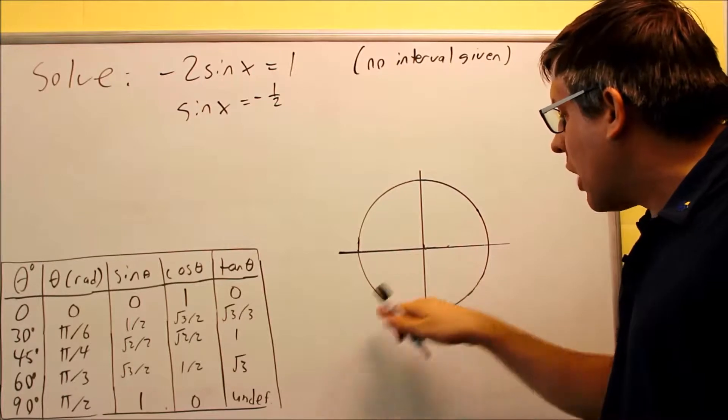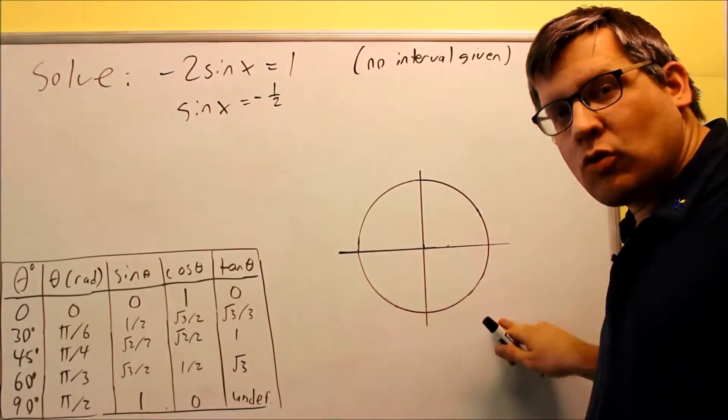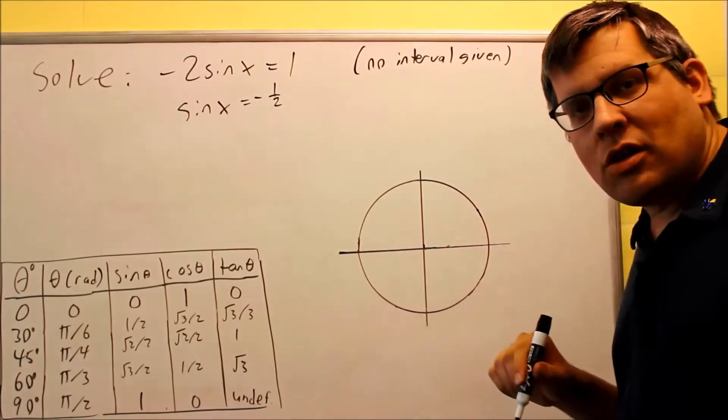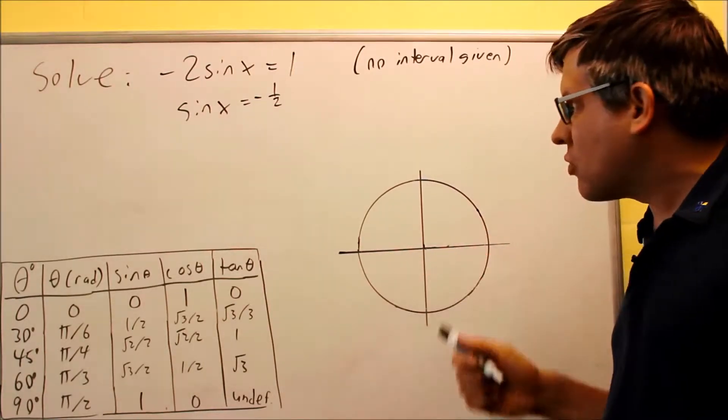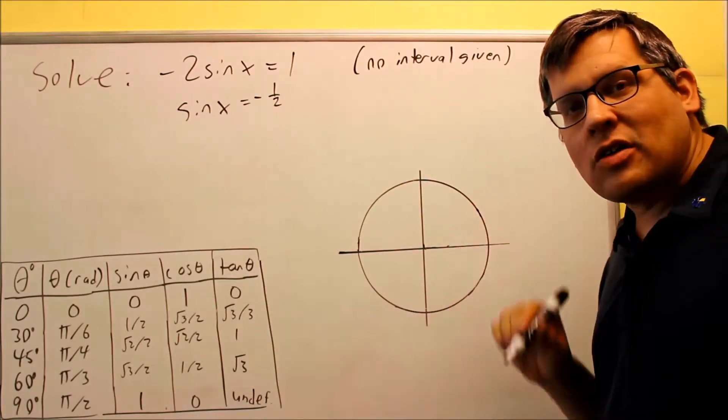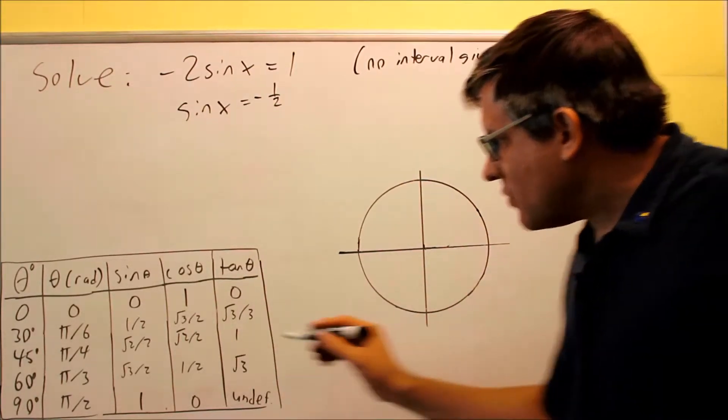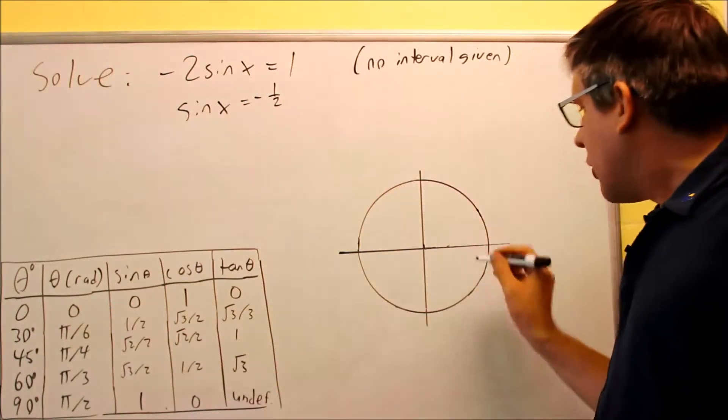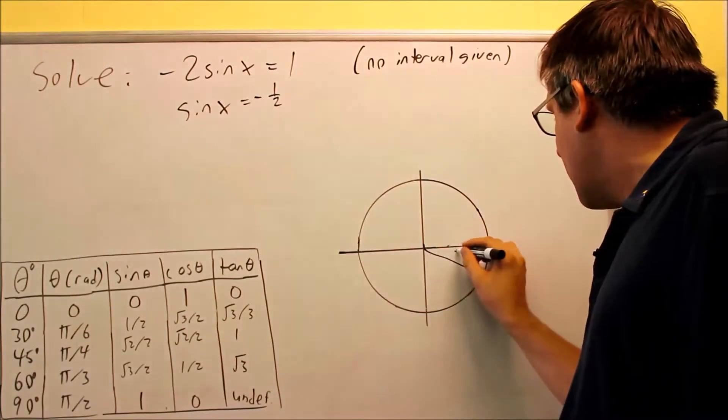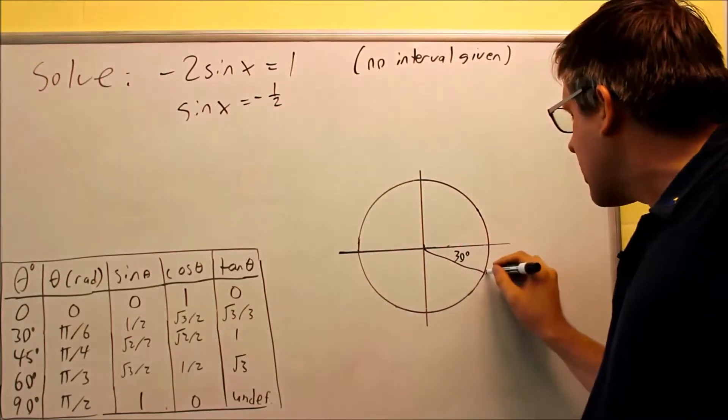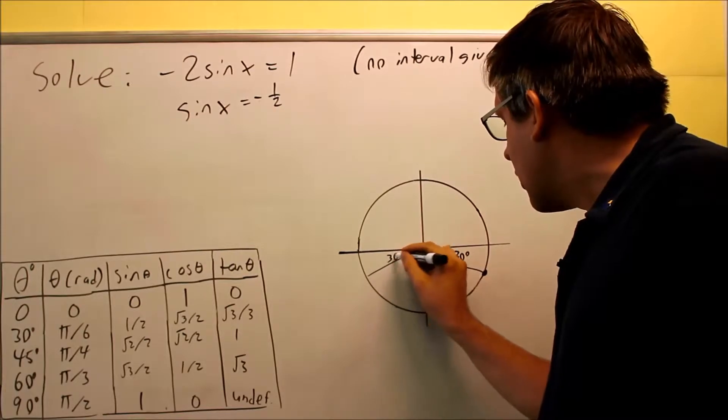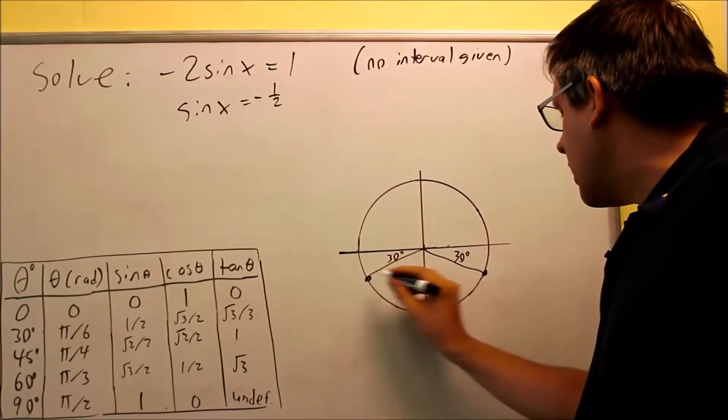Therefore, down here in quadrant number 3 and quadrant number 4 from the all students take calculus sine chart, that tells us these are the two quadrants where I'm going to get an answer. The value I'm looking at is 30 degrees, so that means this is 30 degrees, I'm going to have an answer down there. This is 30 degrees as well, and I'll have an answer right here.